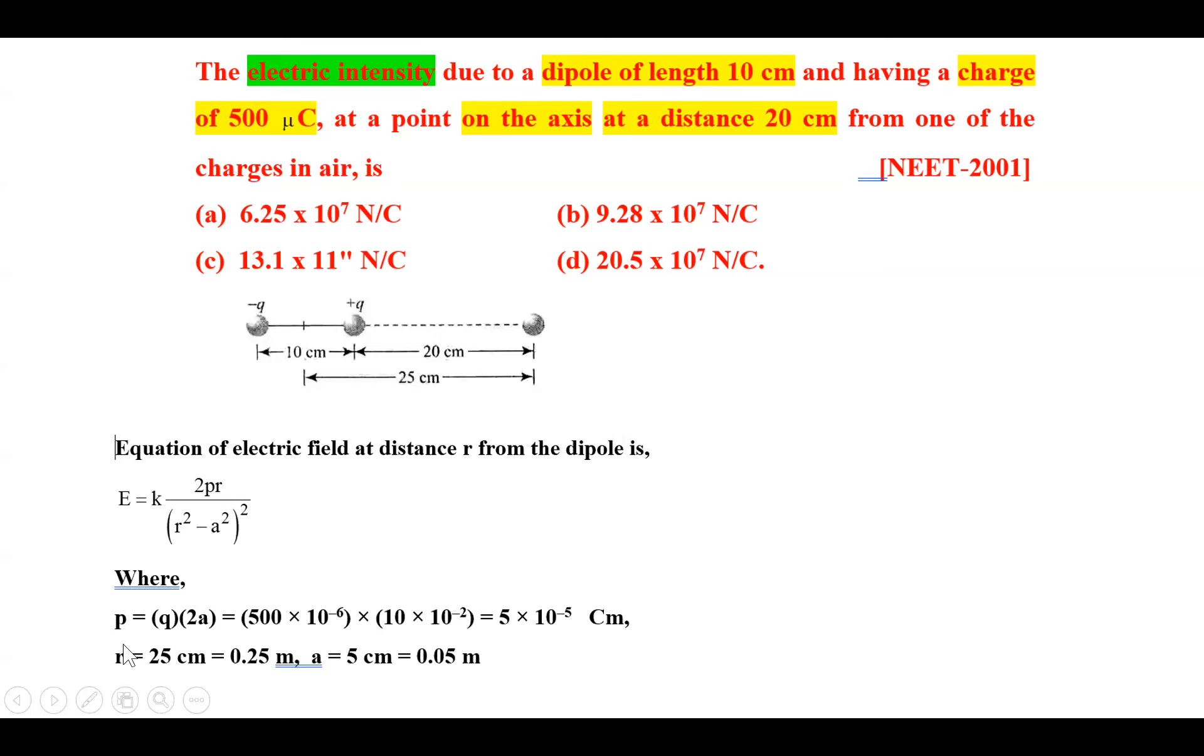Here p we can calculate as q × 2a. Q charge is given as 500 micro coulomb, so 500 × 10^-6. 2a is the distance between two charges, that is 10 cm, so 10 × 10^-2 meter. Our dipole moment p will be 5 × 10^-5 coulomb meter.